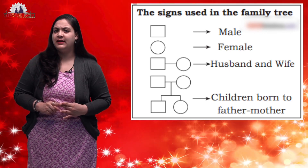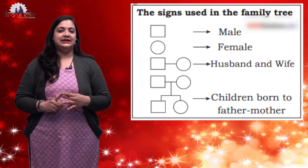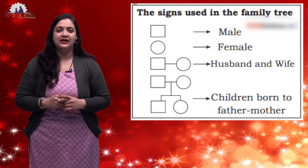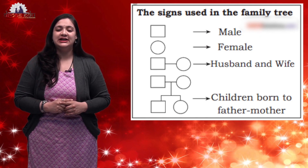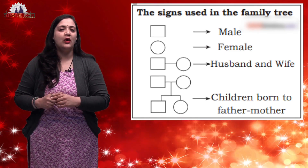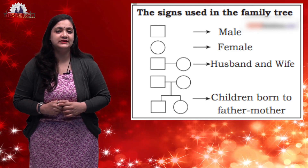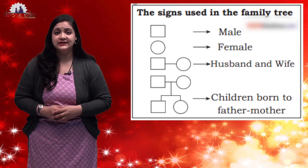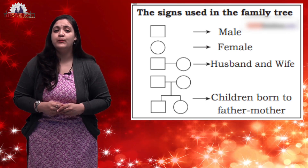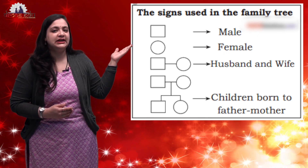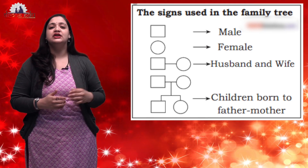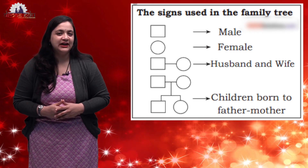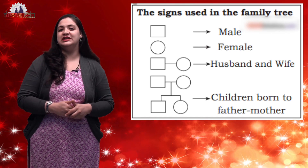Then what about the female, like your grandmom and aunt? Yes, the female is also represented by the sign of a circle. It's easy to identify whether they are male or female. We also have another two signs — the third sign represents husband and wife. And the fourth sign, which is really important, represents children born to the father and mother. You can easily write a family tree using these signs.